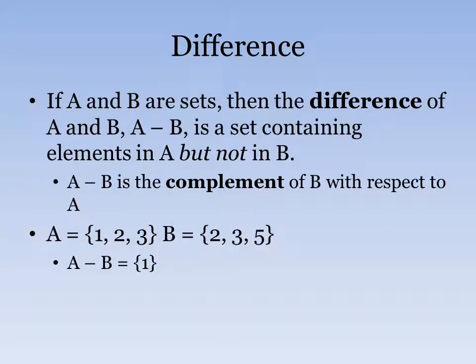We also have the difference of two sets. So if we have a set A and a set B, then the difference of A and B is the set that's containing the elements that are in A but not in B. So we say that the difference of A and B is the complement of B with respect to A. So if we have set A, which is 1, 2, 3, and set B, which is 2, 3, 5, the difference between set A and set B would be 1.